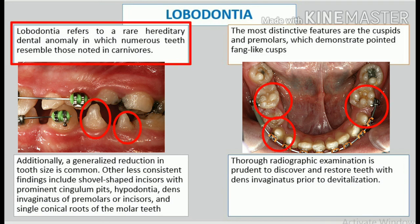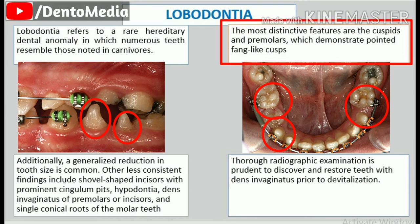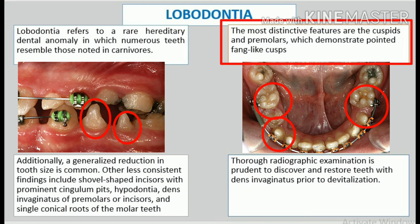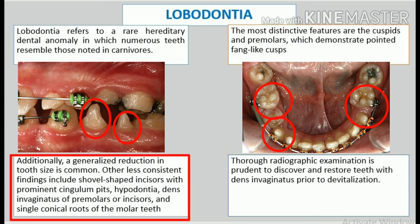Lobodontia. Lobodontia refers to a rare hereditary dental anomaly in which numerous teeth resemble those noted in carnivores. The most distinctive features are the cuspids and premolars, which demonstrate pointed fang-like cusps. Additionally, a generalized reduction in tooth size is common. Other less consistent findings include shovel-shaped incisors with prominent cingulum pits.